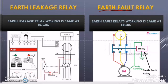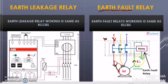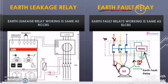For the earth fault relay: suppose the R phase completely detaches from the motor terminal and touches the motor body. Then 100 amperes of current that was flowing through R phase will now flow through the body of the motor. That 100 amperes flows through the earthing conductor connected to the motor body, then through the relay connected in series with the earth conductor. As the relay detects the high amount of current, it trips the circuit breaker to interrupt the power supply.